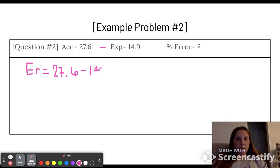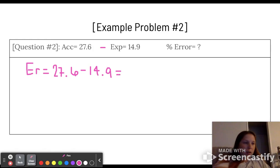So then you don't have to worry about the absolute value bars. So we've got, on my calculator doing this math too, 27.6 minus 14.9, which is 12.7.